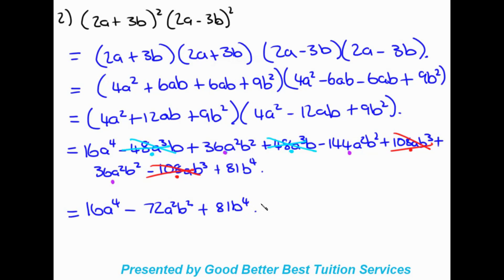When doing these types of examples, it's important to keep track of everything. We did the binomials first to get the trinomials, then multiplied the trinomials, ending up with a lot of terms. There's nothing wrong with reverting to old methods and marking down like terms as you go — it can be very helpful in tracking what you're working with.